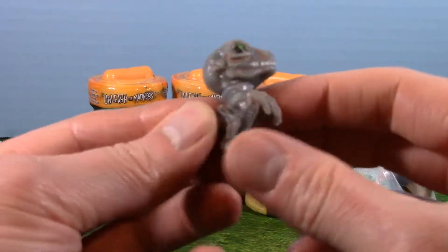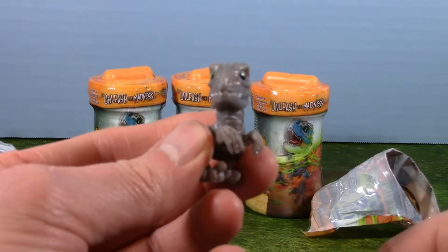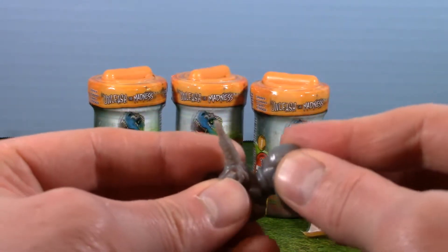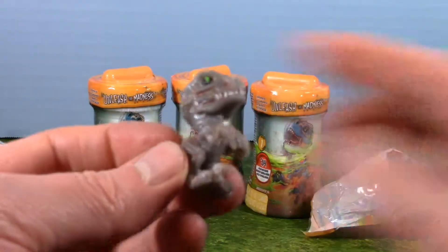He's got little feet, little hands, and his head moves. Of course, his head comes off. You can probably swap these out with some of the others, which is a really neat feature. We can kind of mix and match our own.